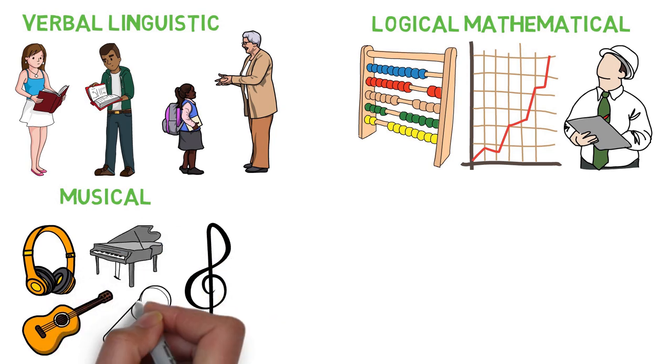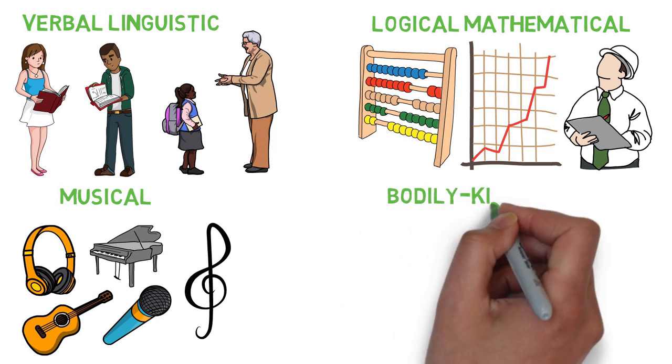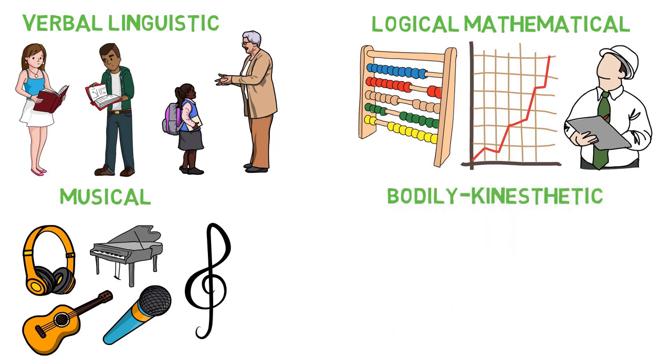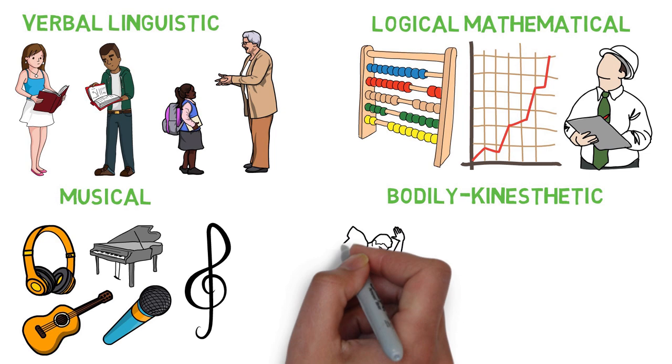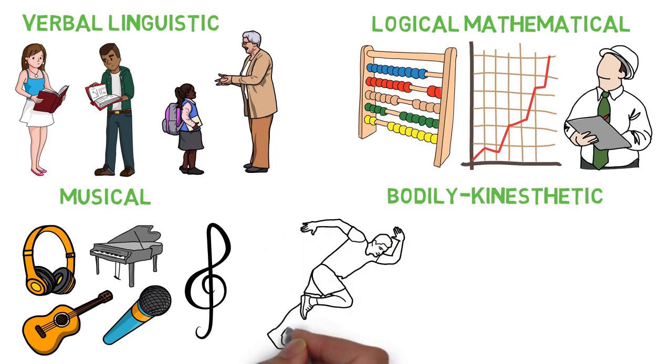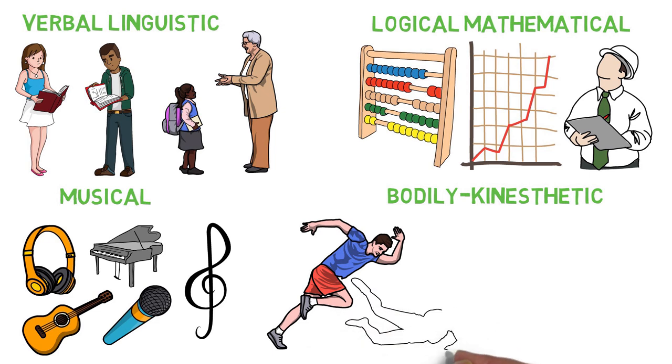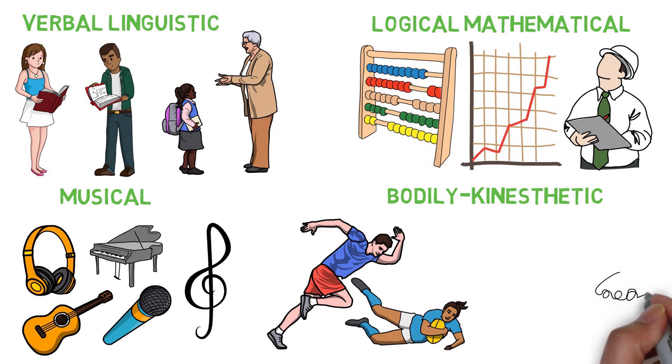The fourth type is bodily kinesthetic intelligence and allows people to use movement and gesture to express feelings, ideas and to interact using the whole body. People with bodily kinesthetic intelligence have high body awareness and learn through movement and physical experimentation. They can handle objects skillfully and perform well in various sports activities.